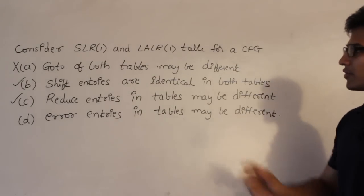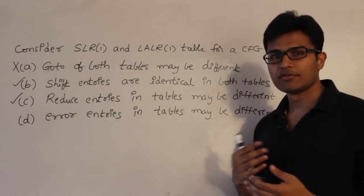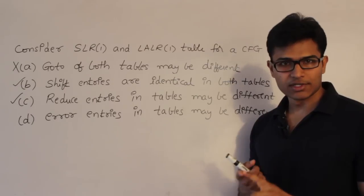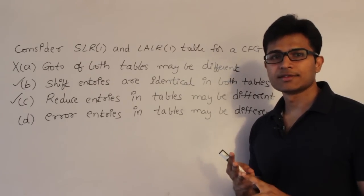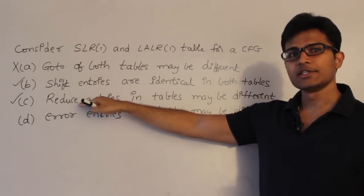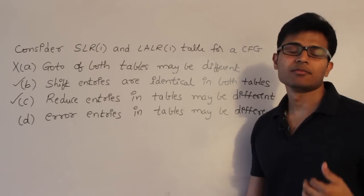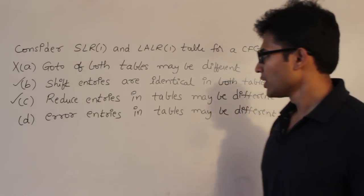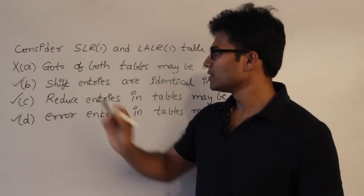Error entries in the tables may also differ. Since shift and goto are the same, only reduce entries change between SLR1 and LALR1. A blank (error) entry is wherever there is no shift or reduce, so changes in reduce entries cause changes in error entries — therefore error entries are definitely going to differ.